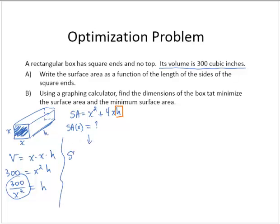So then the surface area, as a function of x, is x squared plus 4x times 300 over x squared. Simplifying gives the surface area is x squared plus 1,200 over x. So there's part A.